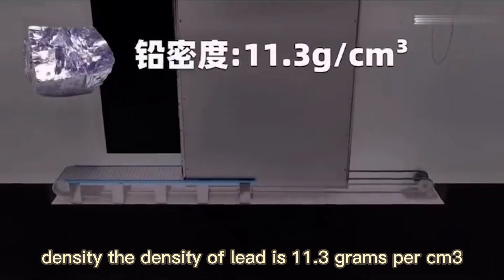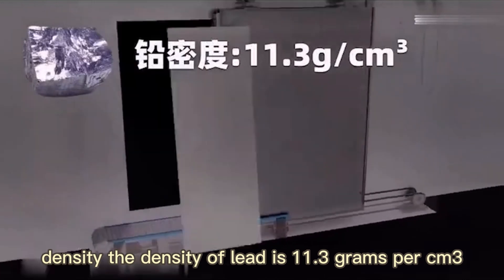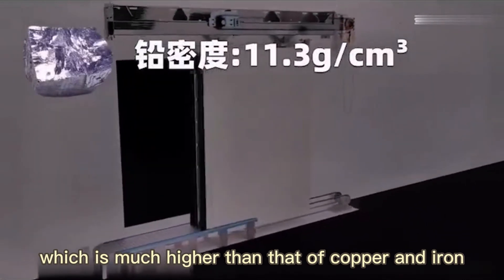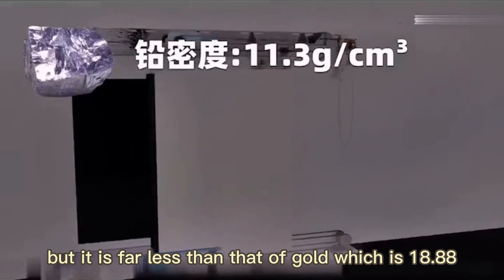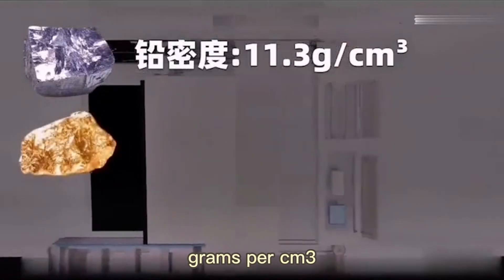The density of lead is 11.3 grams per cc, which is much higher than that of copper and iron, but it is far less than that of gold, which is 18.88 grams per cc.